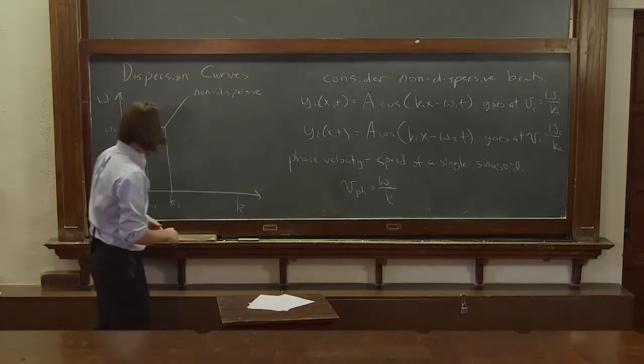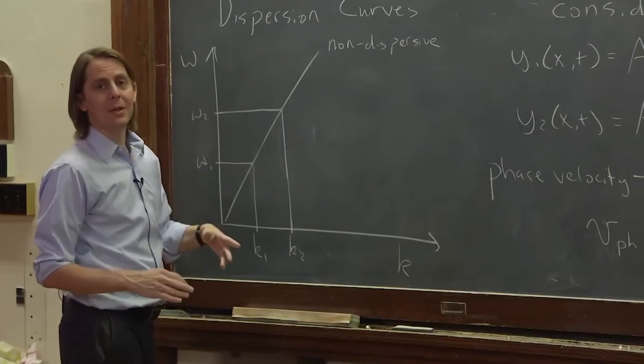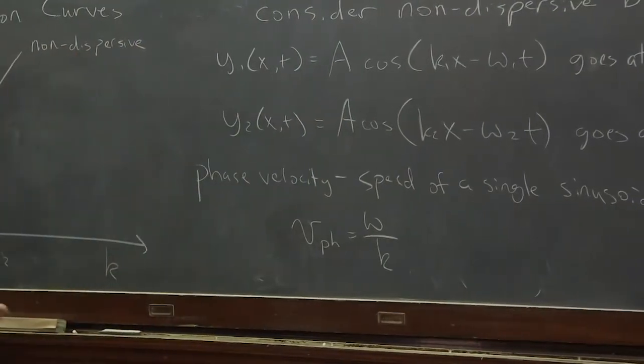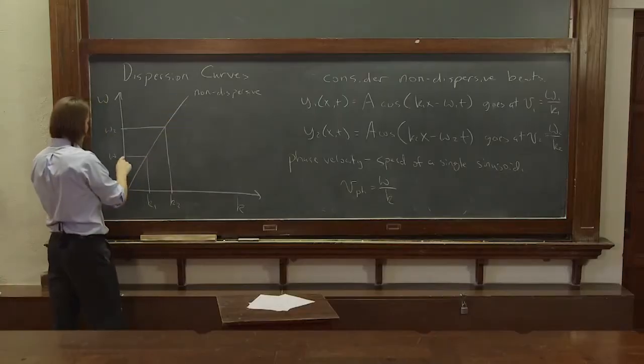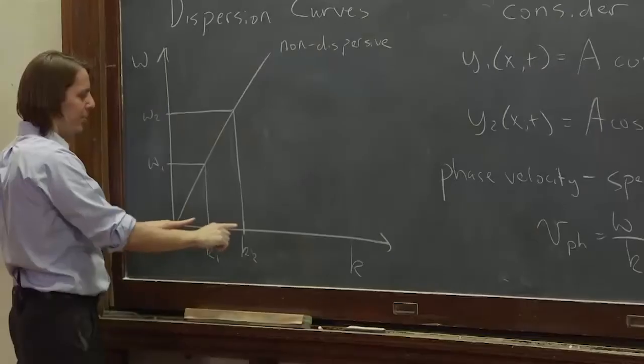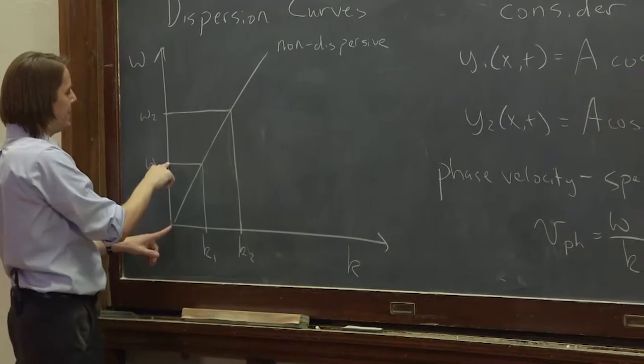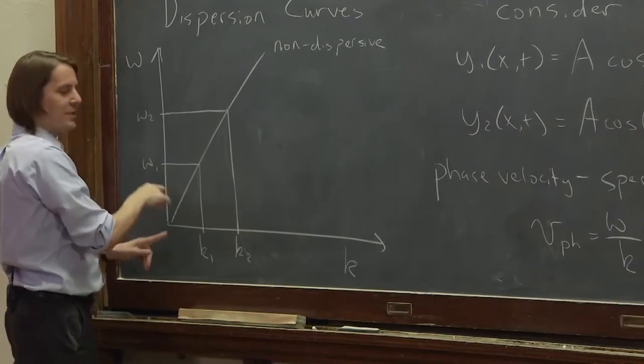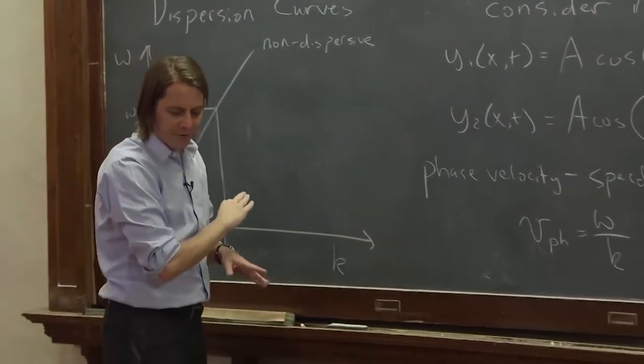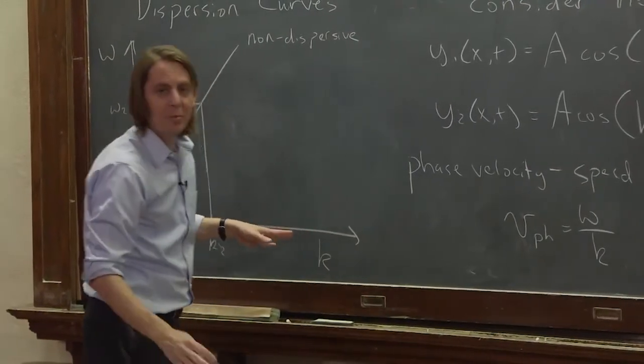Alright, and here you can see a property of a non-dispersive medium is all the sinusoids move with the same speed. I mean, they all move with the same phase velocity because this is a line. If I double ω and if this is a line, a linear relationship, I will double k. If I add 10% to ω, I will add 10% to k. They're proportional if this is a line, if this is non-dispersive.